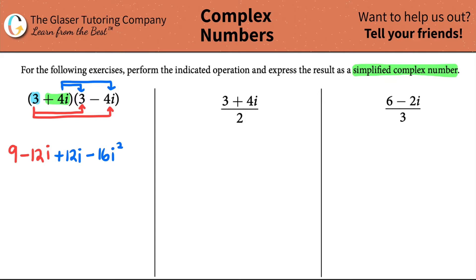Simplifying from here — I have negative 12i plus positive 12i. I can only simplify these two terms because they both have just i in them; the other term has i squared so it can't combine with them. Negative 12 plus 12 is 0, so that cancels out. Now we're just left with 9 minus 16i squared.